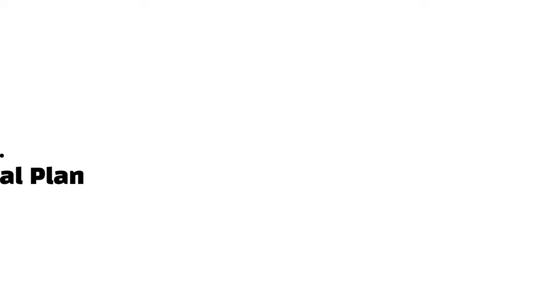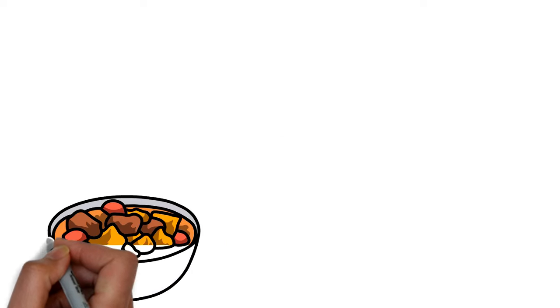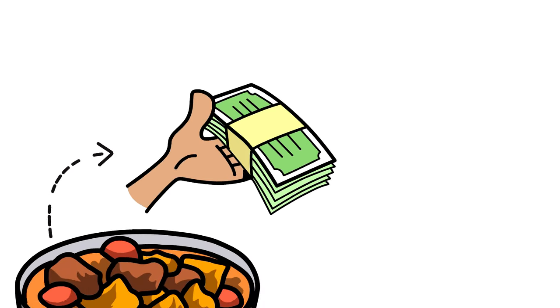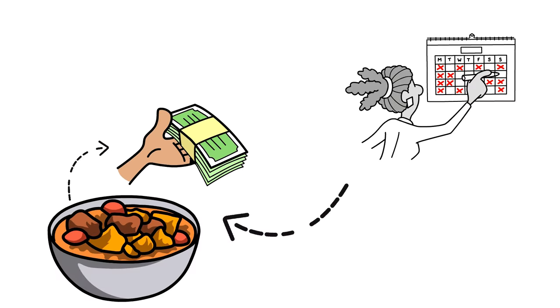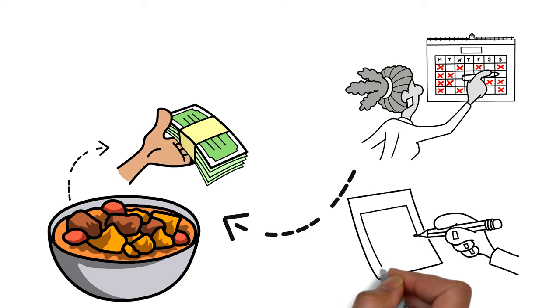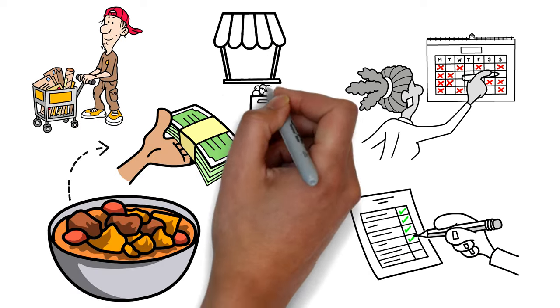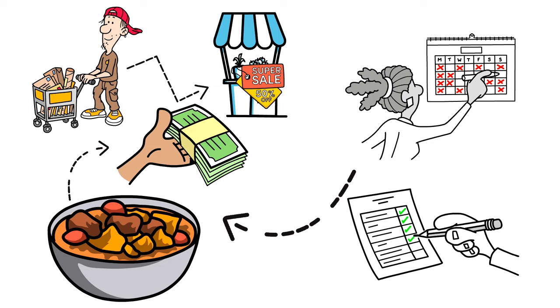Fourteen, get a meal plan. Your feeding will inarguably eat deep into your finances if you don't have a meal plan. Choose what to eat on each day of the week. Plan to eat more affordable meals, buy foodstuffs and ingredients at cheaper grocery stores, and so on.